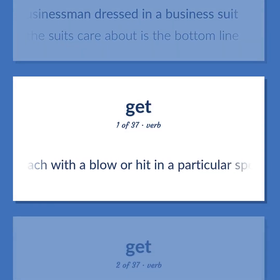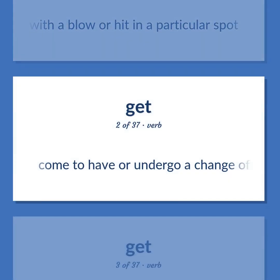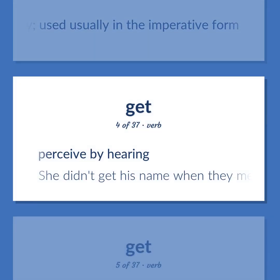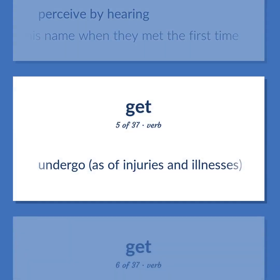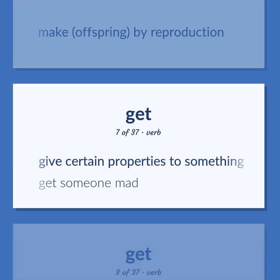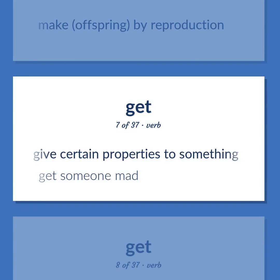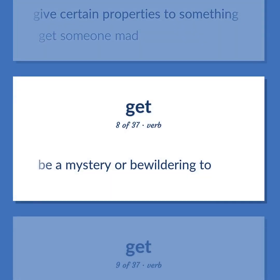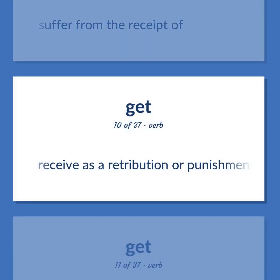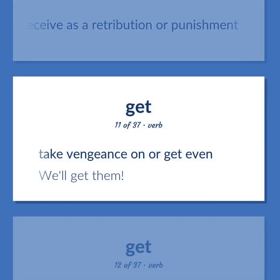Reach with a blow or hit in a particular spot. Come to have or undergo a change of physical features and attributes. Leave immediately — used usually in the imperative form. Perceive by hearing. She didn't get his name when they met the first time. Undergo, as of injuries and illnesses. Make offspring by reproduction. Give certain properties to something. Get someone mad. Be a mystery or bewildering to. Suffer from the receipt of. Receive as a retribution or punishment. Take vengeance on or get even. We'll get them.